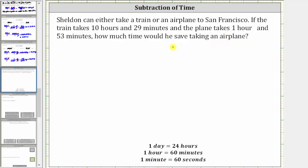To determine the time saved, we need to subtract one hour and 53 minutes from 10 hours and 29 minutes. So let's go ahead and set this up. We begin with 10 hours, 29 minutes, and we subtract one hour and 53 minutes.